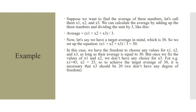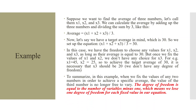For example, if x1 = 45 and x2 = 25, then to achieve the target average of 30, x3 must be 20 — we have no degree of freedom. To summarize: when we fix the values of any two numbers to achieve a specific average, the third number is no longer free to vary. The degree of freedom equals the number of variables minus one, meaning we lose one degree of freedom for each fixed value in our equation.